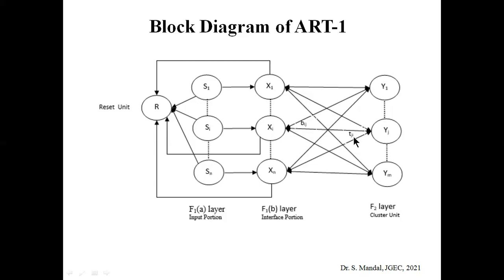So X is connected to Y via weight TIJ, and the F2 layer is connected back to the F1 layer via BIJ. Two sets of weights are required because we need to identify new clusters without hampering already stored clusters. If a new cluster hasn't been found, we need to store that new cluster as well.